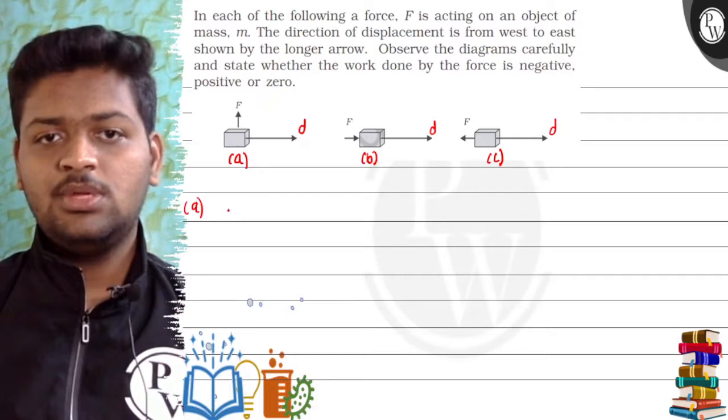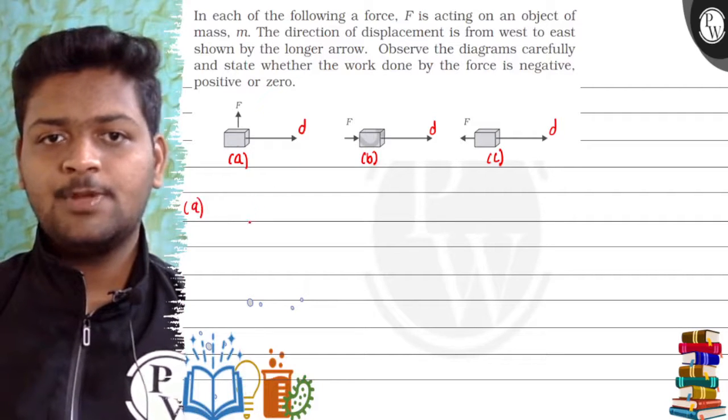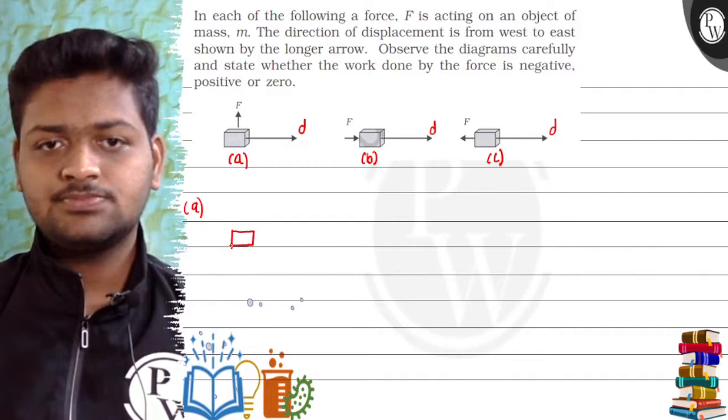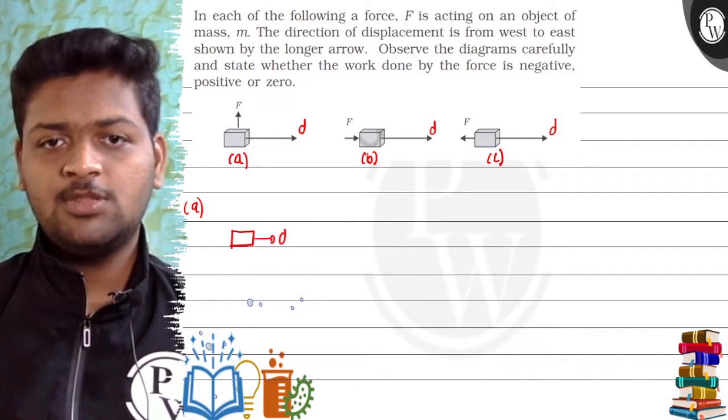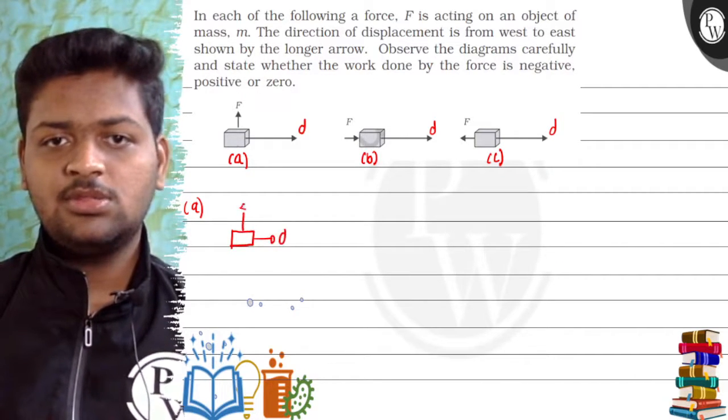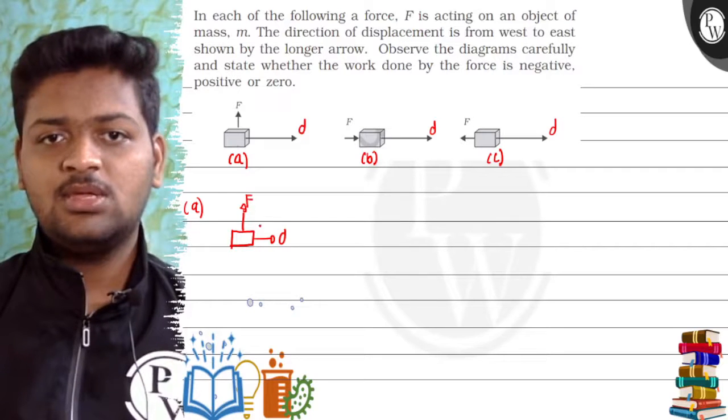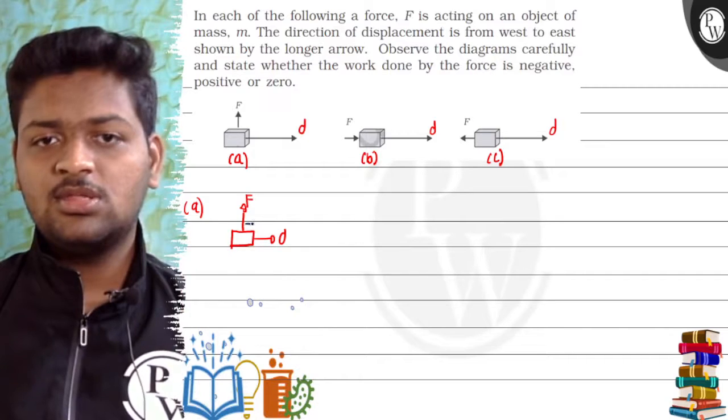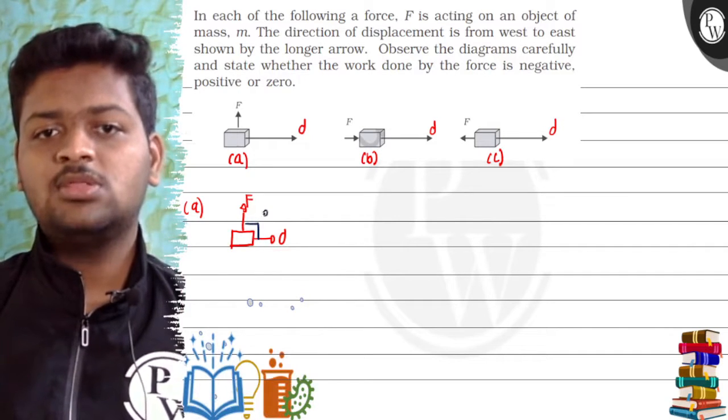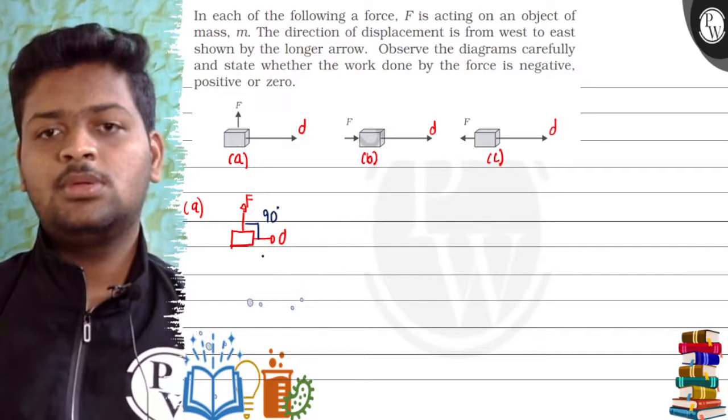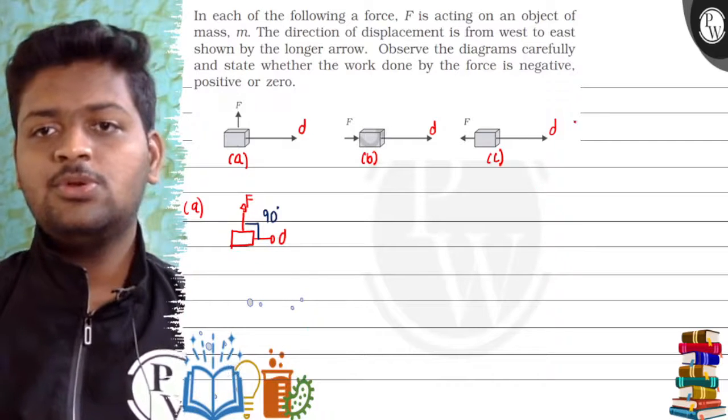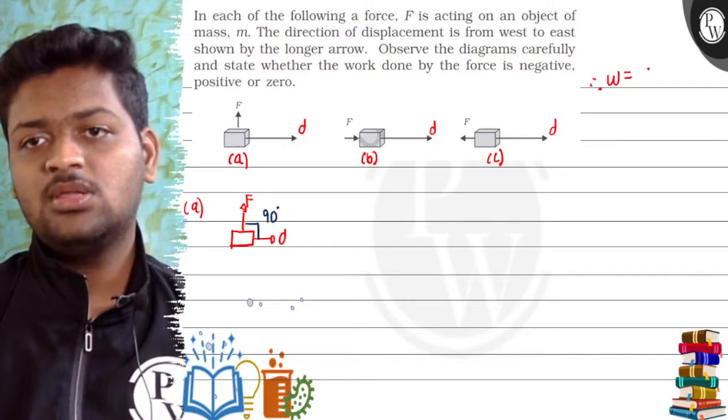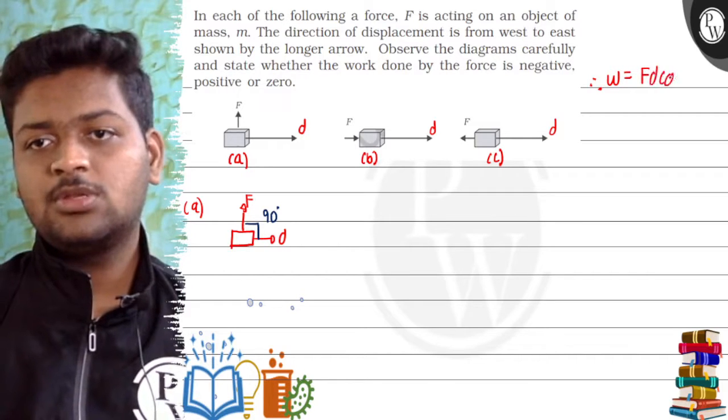First of all, in case A, we can see there's a block. Here is the displacement, and this is the force. This is our case A. Now we can see in this case that the angle between both is 90 degrees. So first of all, we should know the basic formula of work done, that is work done is Fd cos theta.